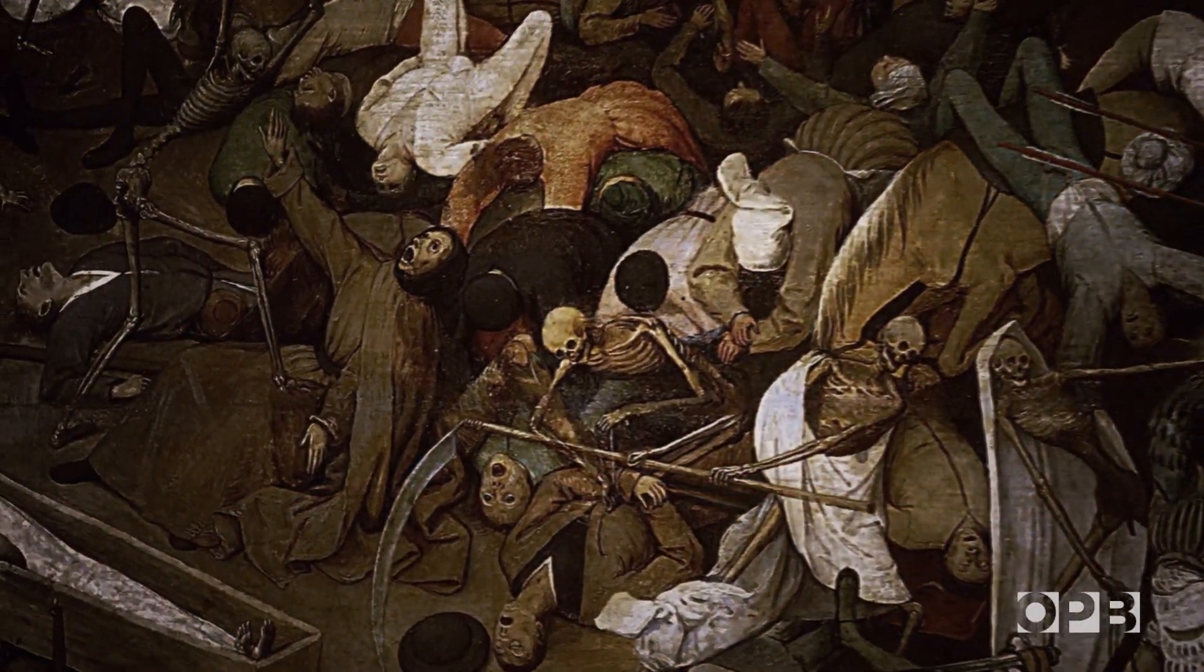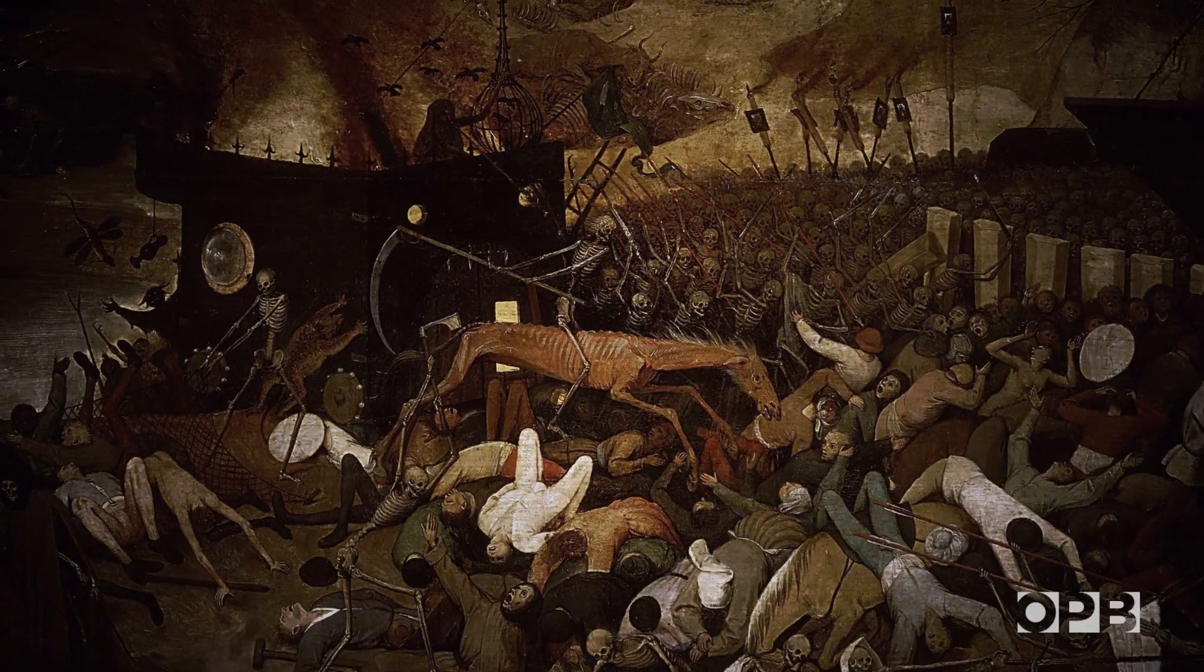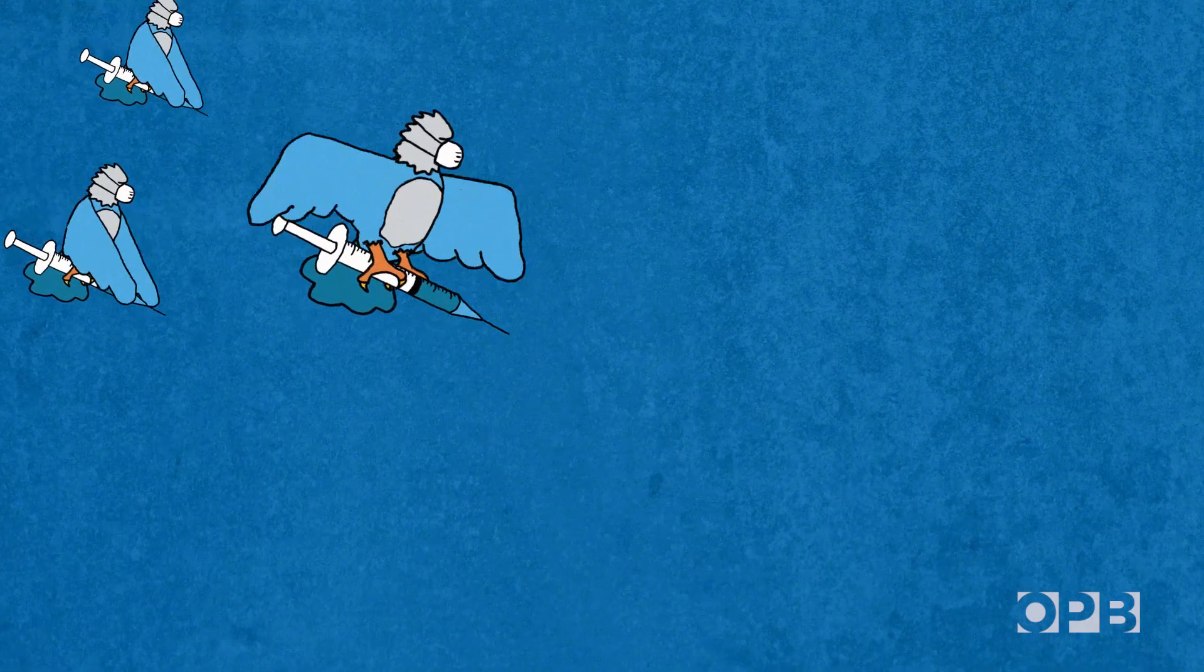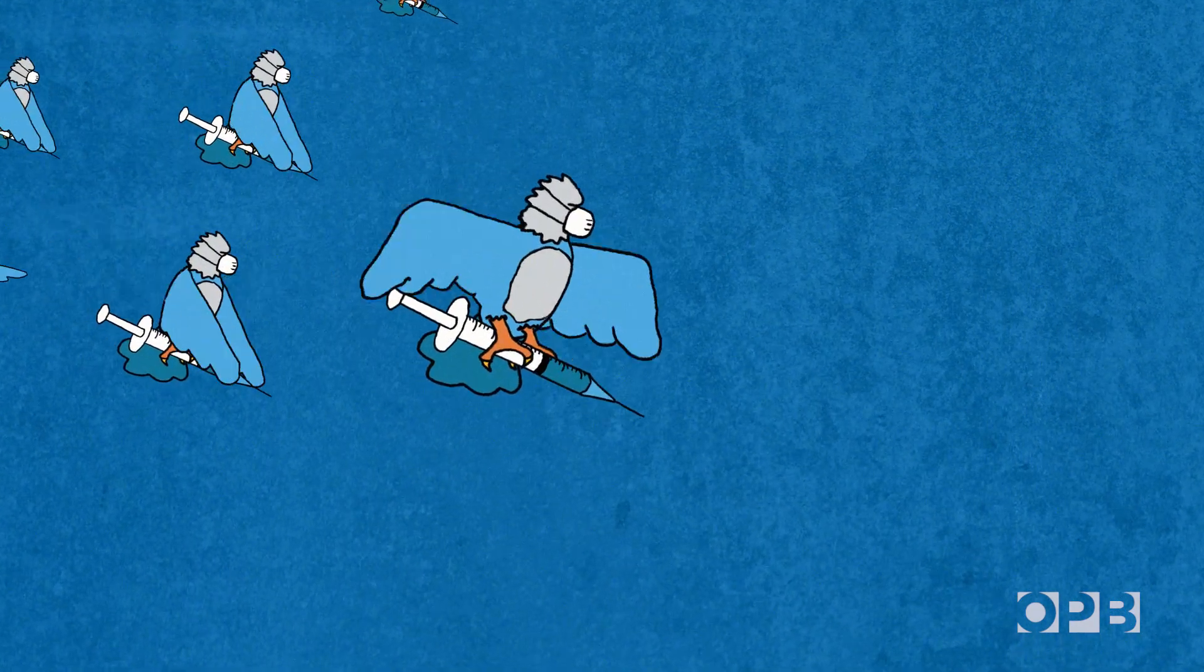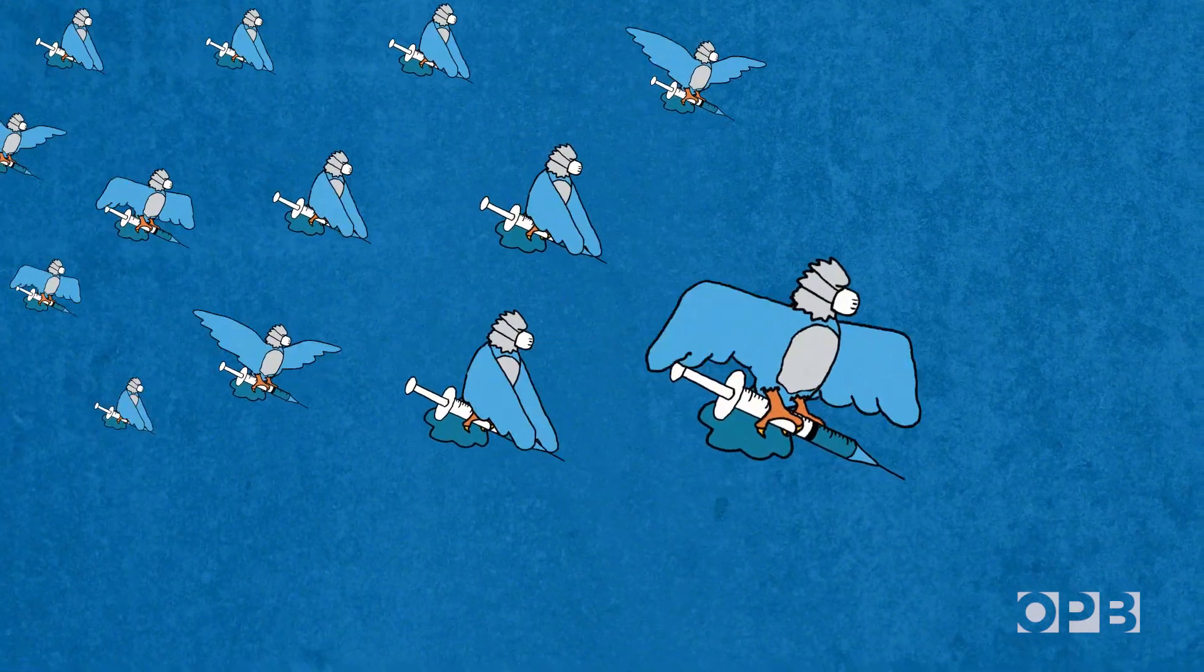For most of human history, the only way to get herd immunity was to let a disease run its course. Basically, let a lot of people die. Vaccines change that calculus in a big way, providing a much safer way for people to become immune. With vaccines, herd immunity is not only possible, it's within reach.